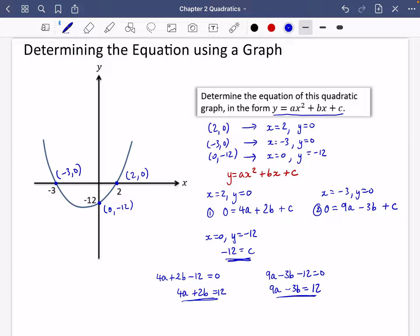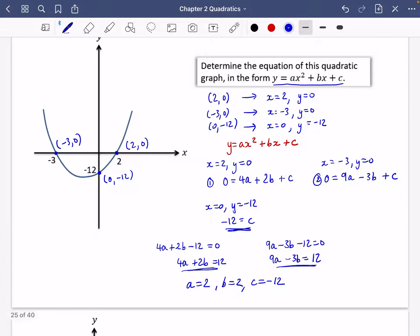I would recommend going to your calculator, doing the simultaneous equation solver, and just doing it nice and quick. So let me just quickly do that. 4a, 2b equals 12. 9a minus 3b equals 12. So we come up with that a is equal to 2 and b is equal to 2 and c is equal to minus 12.